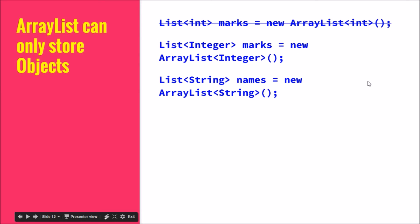Whereas with ArrayList, you cannot have a primitive as the type. If you want to store int, you have to use the wrapper class Integer. Similarly for float, use Float with a capital F, or Double with capital D. These wrappers are used for storing primitive data in ArrayLists. If you try to use a primitive type in an ArrayList, you will get a compile error.